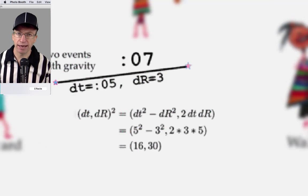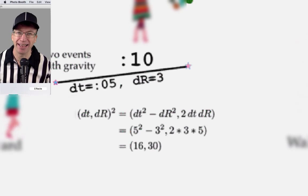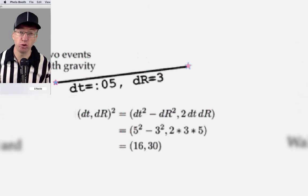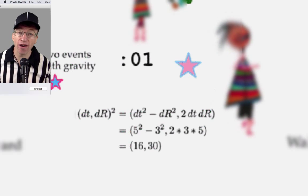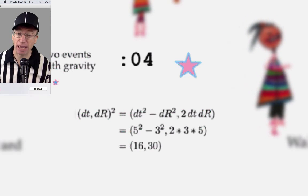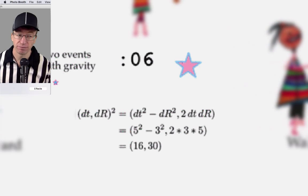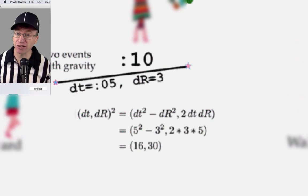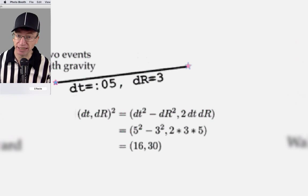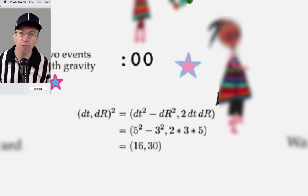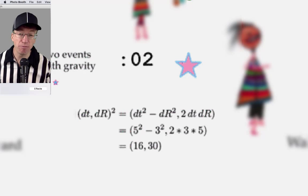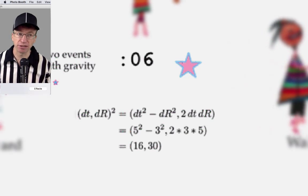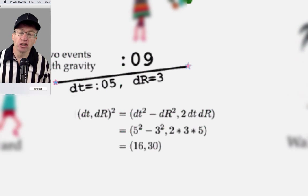But what does one do with measurements anyway? Well, I do something that's both simple and unusual. I square the difference between the events in space-time. Now, that's actually not a legal move using the standard accounting system of physics, which is called a tensor. What I use is a type of math called a quaternion, where squaring of events in space-time is perfectly A-OK.